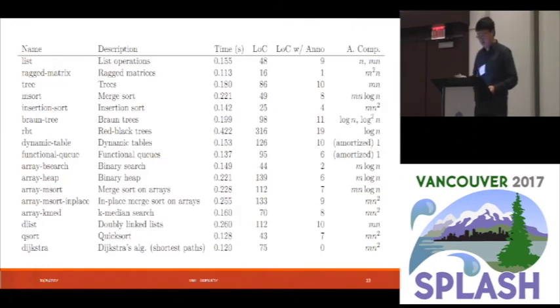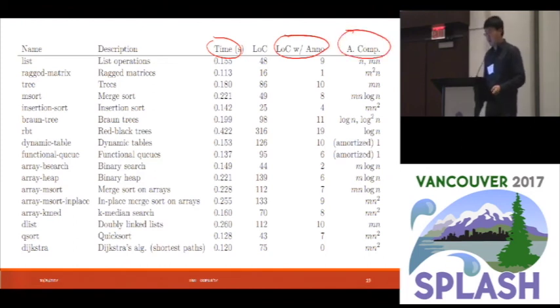So lastly, this table shows the evaluation results of using Timo on 17 benchmark examples, example programs. The third column is the time to run the type tracker and the big O inference engine and the SMT solver. So each example program can be fully type checked within half a second. The fifth column is the number of lines of code with annotations and the last column shows asymptotic complexities for some representing top level functions.